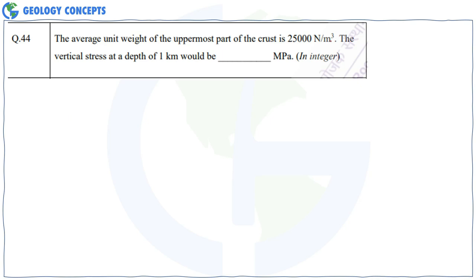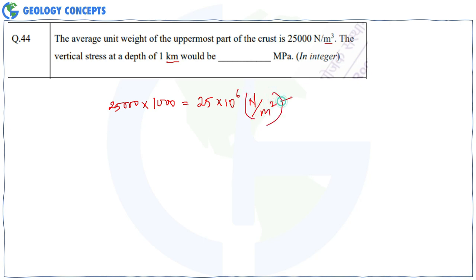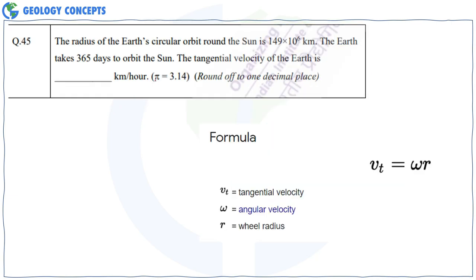Question 44: The average unit weight of the uppermost crust is 25,000 N/m³. The vertical stress at a depth of 1 kilometer is how many MPa? Stress = force per unit area, so multiply unit weight by depth: 25,000 × 1,000 m = 25 × 10⁶ N/m² = 25 MPa.